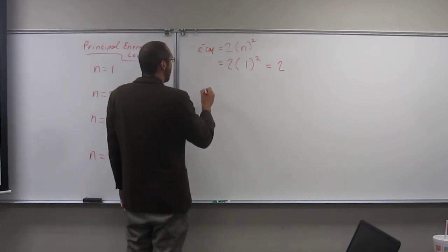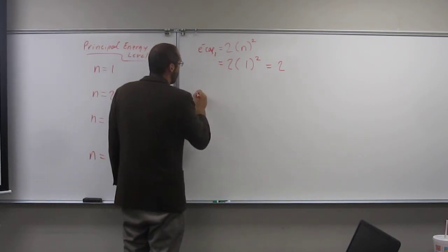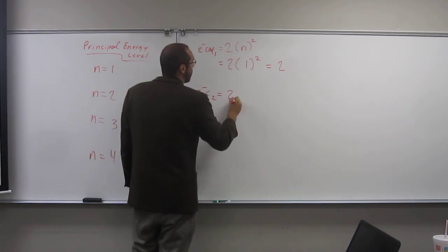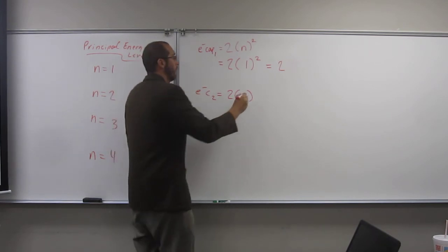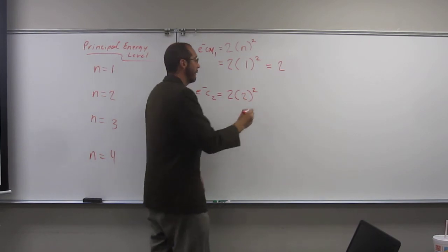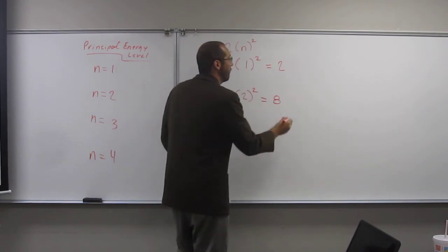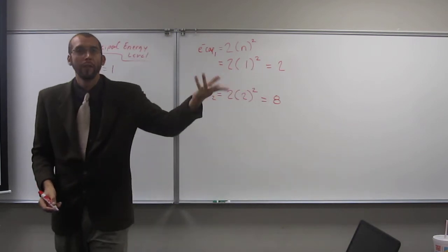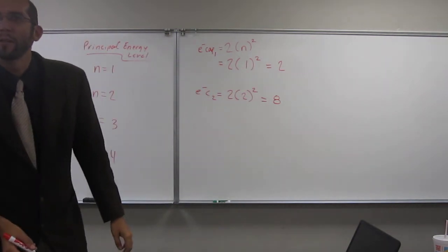What about the second energy level? So, that would be 1. We'll say electron capacity for 2 is going to be, again, 2n, but n this time is 2, right? 2 squared. So, what's 2 squared, guys? 4. 4 times 2? 8. Is that how many you would have expected from looking at the periodic table? Yes. Yeah, it is, right?